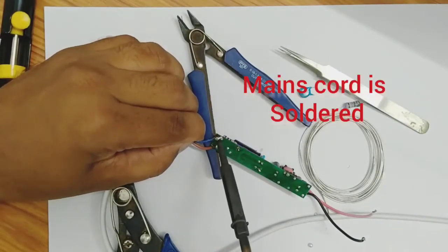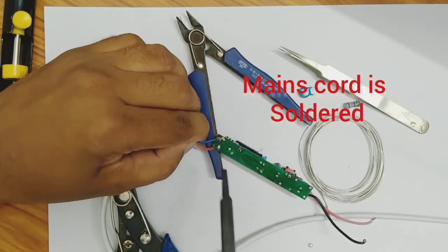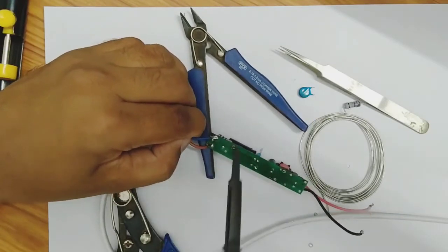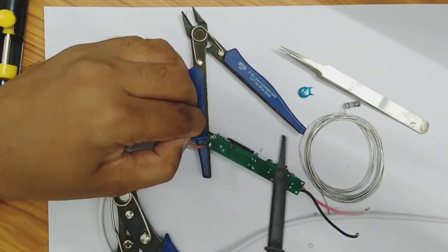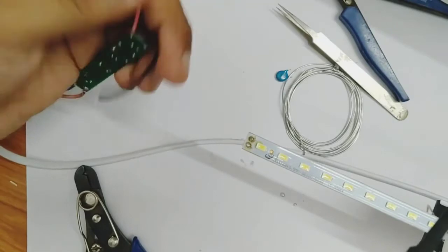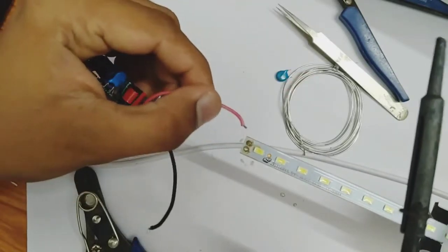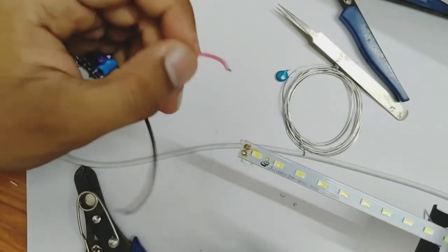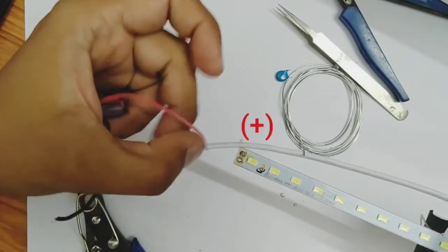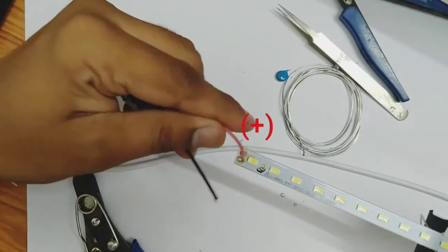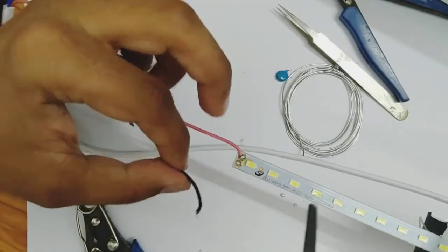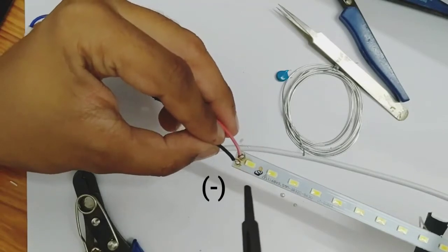Now it is done. Now finally I soldered the mains cord. Now I soldered this repaired board to the LED strip. While soldering this, care must be taken that the red wire should be connected to the positive side. Here you may find the positive terminal on this strip. Connect red wire to the positive and black to the negative terminal.